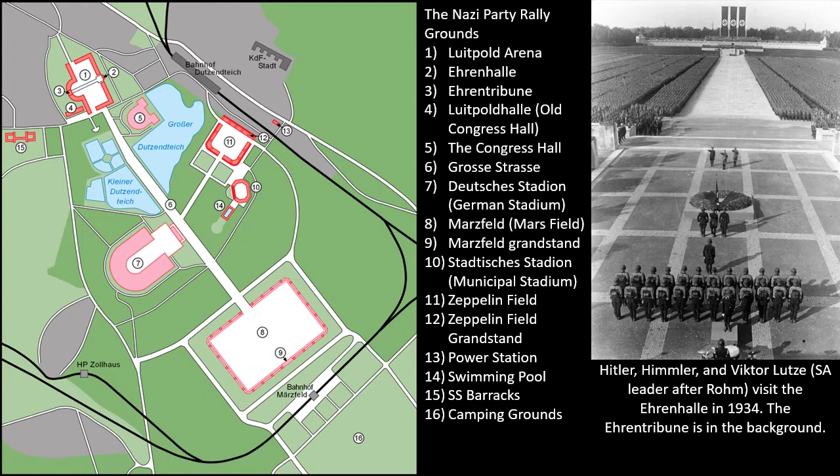The final existing building on site was the Municipal Stadium in the south end of the park, built to host sporting events in 1928. The stadium was incorporated into the designs and given over to the Hitler Youth, who hosted their own events, sports competitions, and rallies during the congress. Hitler was portrayed as the chief architect in the redesign of the park into the rally grounds, but in reality that was in the hands of three architects: the brothers Ludwig and Franz Ruff, and Albert Speer.